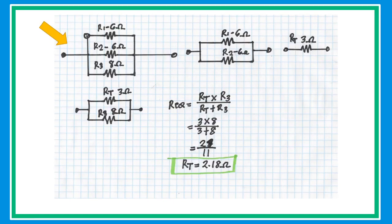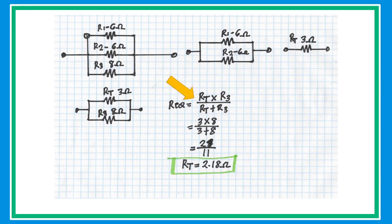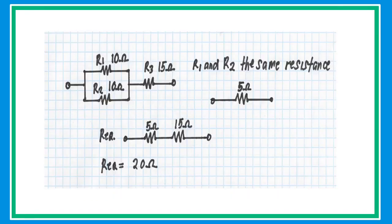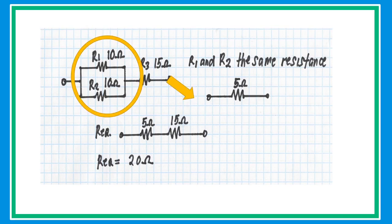In this problem, R1 and R2 have the same value of 6 ohms, so get half of that value. Then we redraw the circuit. Since two additional resistors are connected in parallel with a different value, we use the product-over-sum formula and substitute the values to get an equivalent resistance of 2.18 ohms. In another example, R1 is 10 ohms, R2 is 10 ohms, and R3 is 15 ohms. The two identical resistors in parallel give 5 ohms equivalent resistance.